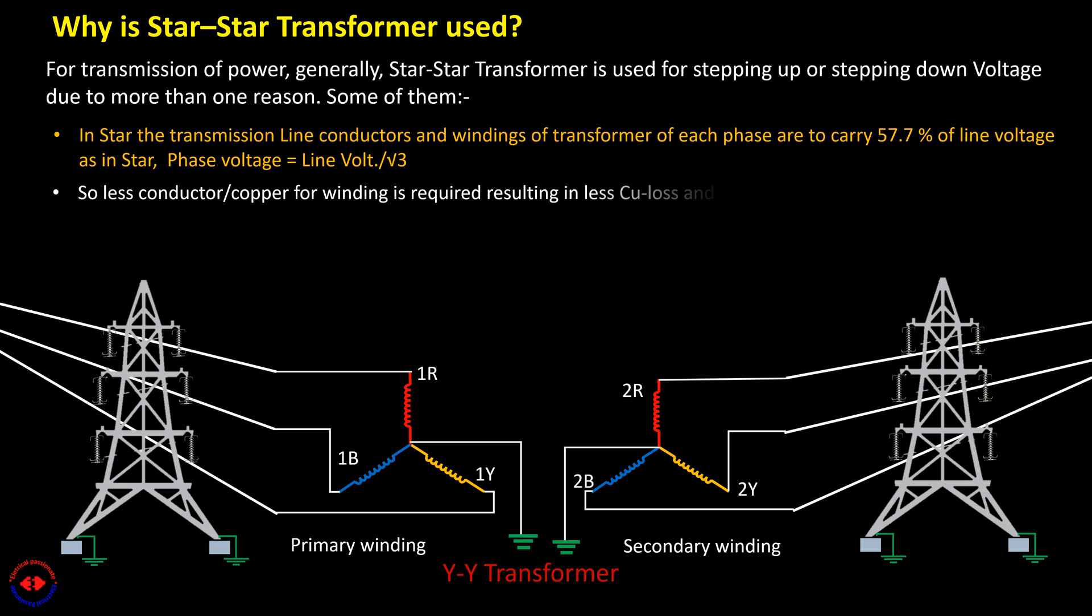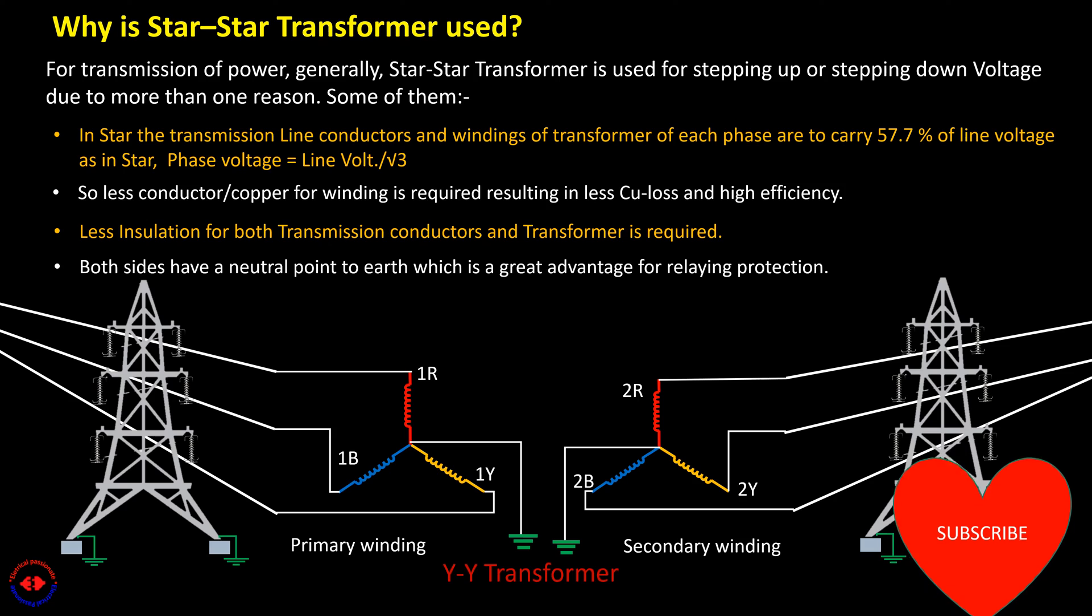So, less conductor or copper for winding is required, resulting in less copper loss and high efficiency. Less insulation for both transmission conductors and transformer is required. Both sides have a neutral point, which is a great advantage for the relaying protection.